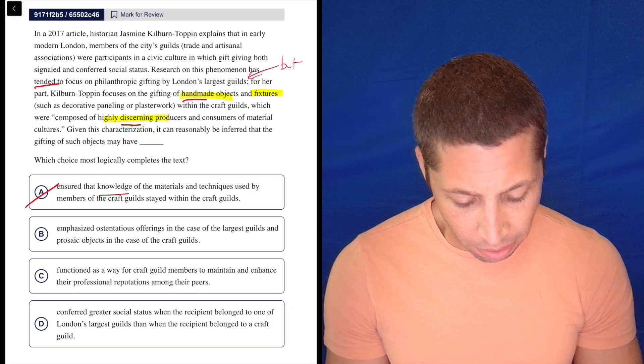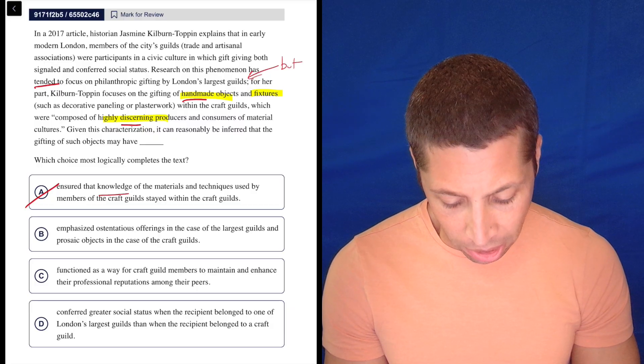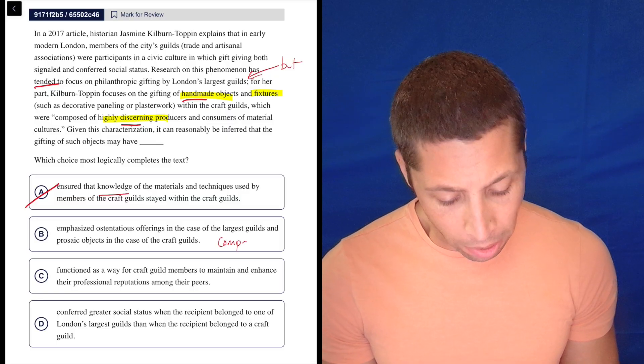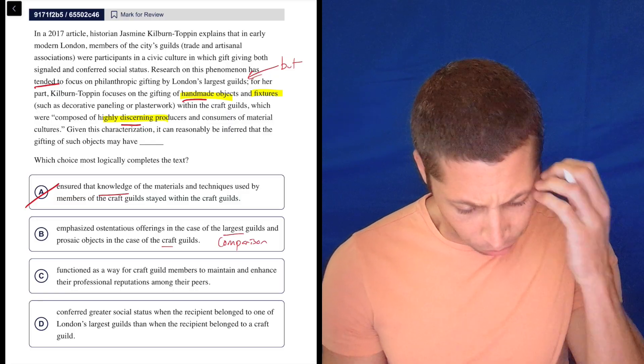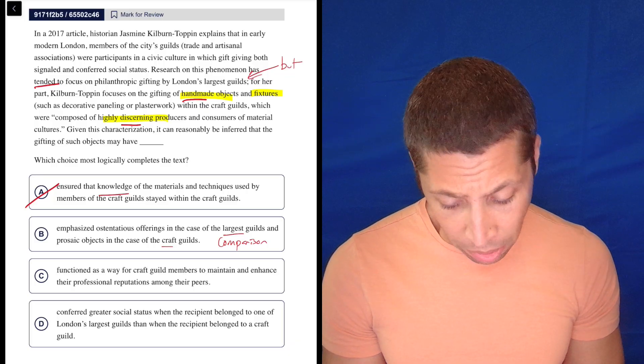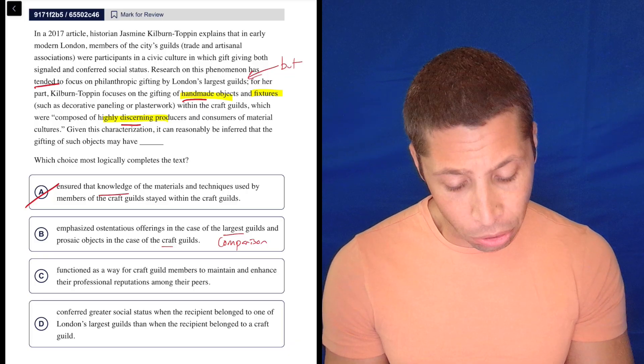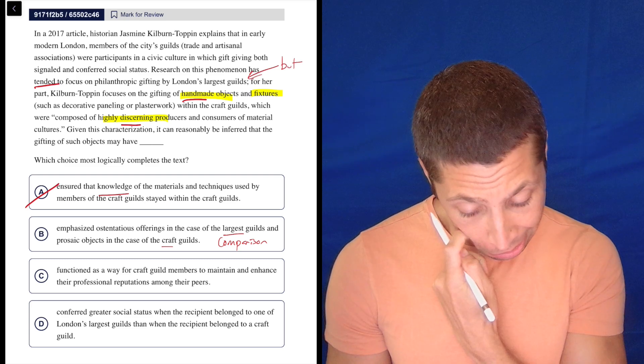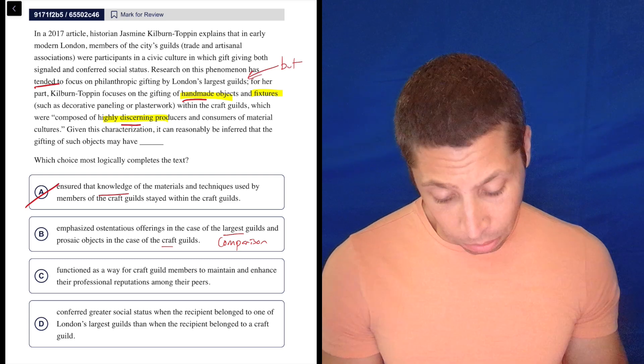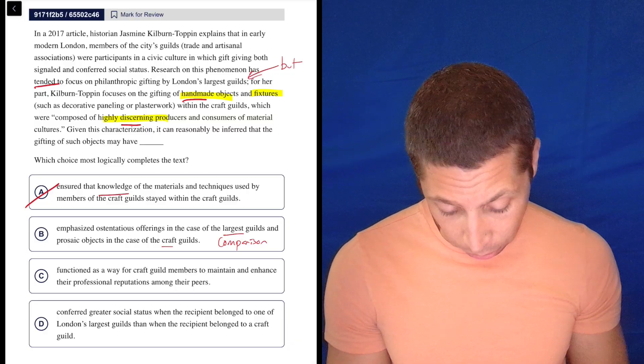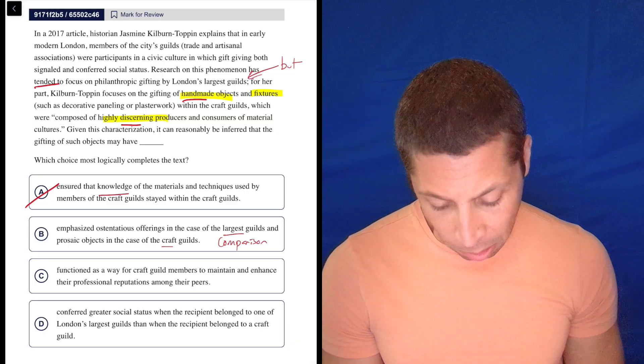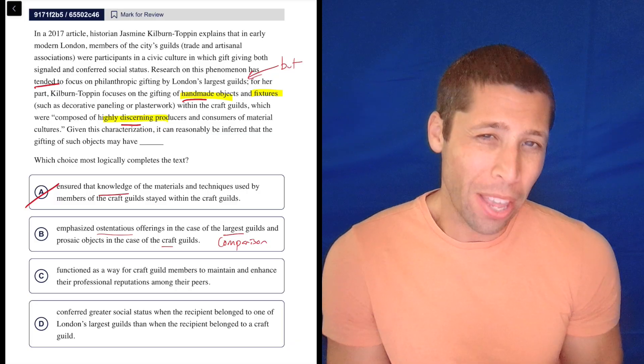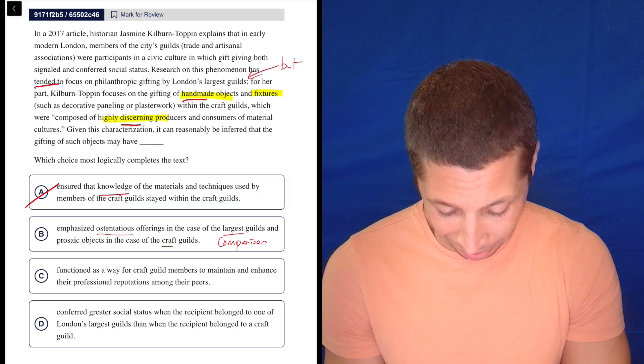emphasize ostentatious offerings in the case of the largest guilds and prosaic objects in the case of the craft guilds. Are they comparing? This is like a comparison, right? Are they comparing the sizes of the guilds? I don't think so. It says that the old research used to focus on the largest guilds. This person is looking at the craft guilds, but why are we bringing back the largest guilds? It just seems random. So I don't like this. I don't love that it's a comparison. Is it supposed to be ostentatious, meaning kind of overly fancy? I don't think so. I think they're just nice things that they're giving.